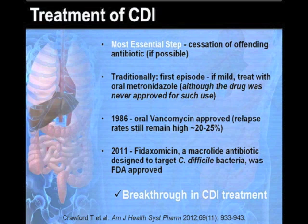In 1986, oral vancomycin was approved for use in CDI. Despite that, relapse rates for CDI remain high at about 20-25%. In May of 2011, and 25 years after vancomycin approval, a macrolide antibiotic — fidaxomicin — designed to target Clostridium difficile bacteria was FDA-approved for CDI treatment. This represents a breakthrough in CDI treatment.